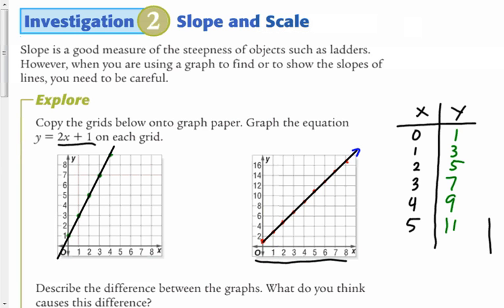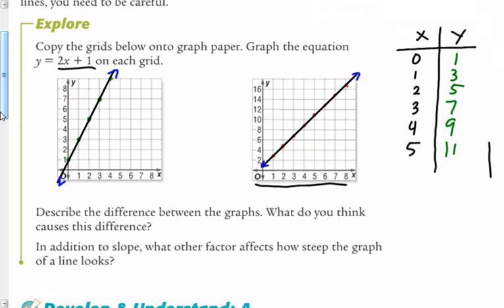But as we look at both of those, we graph the exact same relationship on both graphs, and yet they look different. If you were to say which one had a greater rate of change, you would say this one because that one is steeper.